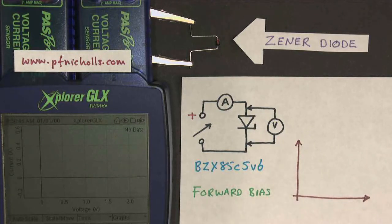The name of this diode is BZX85C5V6, and the Z indicates that it's a Zener diode.